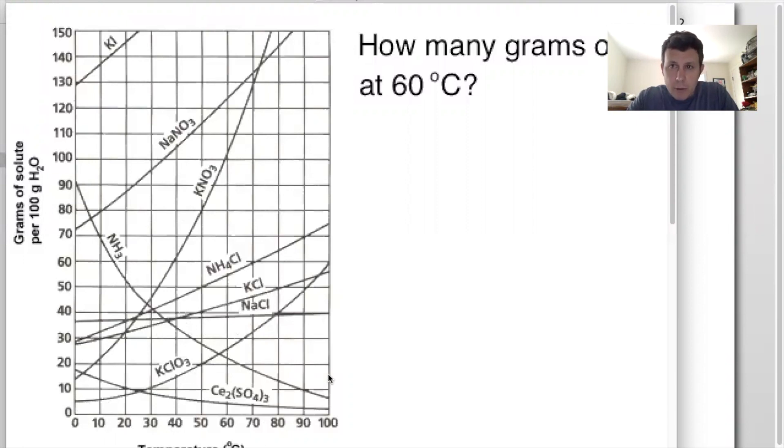Generally, the ones that have a downward trend are gases, like NH3 is a gas. As it gets warmer, less can dissolve because the gas has so much energy, it just escapes. There are other exceptions.